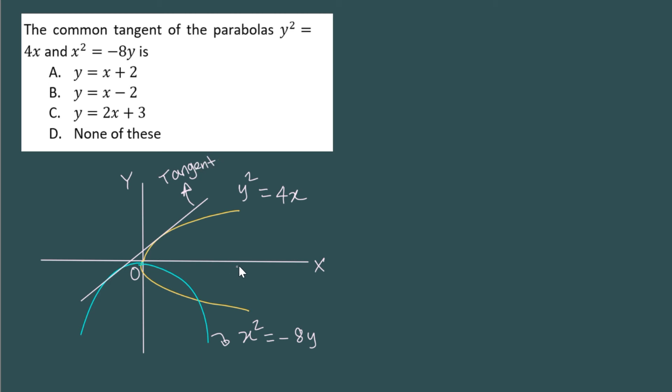Now for a moment, if you focus only on the parabola y square equal to 4x, and taking the slope of the tangent as m. We know the equation of the tangent of such a parabola. So for a standard parabola y square equal to 4ax with slope m, the equation of the tangent is y is equal to mx plus a by m.